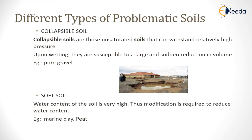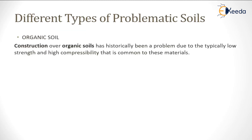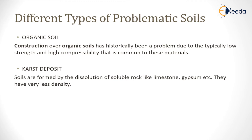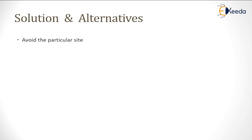Next is organic soil. The organic content of these types of soil is very high, with typically very low strength and very high compressibility. Next is karst deposits. These types of soils are formed by soluble rock such as limestone and gypsum, and they have very low density. We have to alter their properties in order to construct buildings over them.